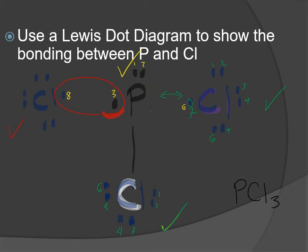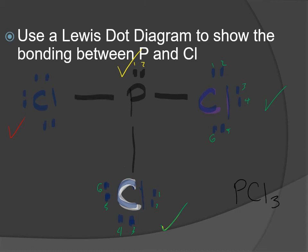Each shared pair of electrons - one from each atom - gets simplified by drawing a line between the phosphorus and the chlorine. We remove the circles and dots and keep just the line. Each line between atoms represents a shared pair of electrons, replacing the circle and dots. That line is the covalent bond - the bond that holds the molecule together.